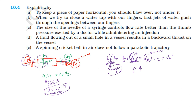When the area changes — that is, area A2 is less than A1 — by the equation of continuity, the velocity V2 becomes greater than V1. And by Bernoulli's principle, as velocity increases, the pressure changes — pressure decreases.